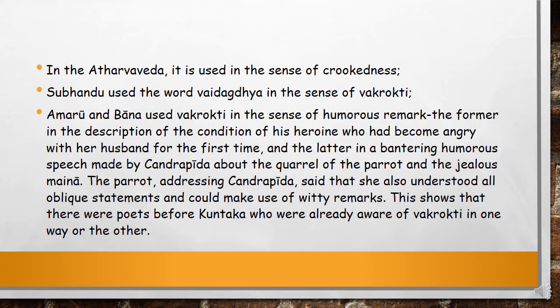We will read these references later in our suggested readings. The parrot in the story was addressing Kandripada and said that she also understood all the oblique statements and could make use of witty remarks. This shows that since we have references to obliqueness in earlier texts in Amaru, Kuntak was not the first one to use it — there were poets before Kuntak who were already aware of the term Vakropti in one way or the other.